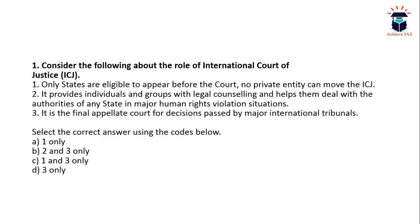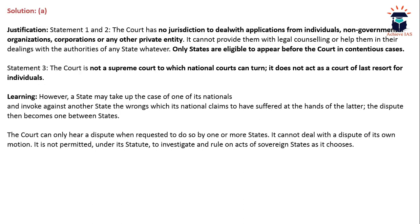First question: consider the following about the role of the International Court of Justice. First, only states are eligible to appear before the court — no private entity can move ICJ. Second, it provides individuals and groups with legal counseling and helps them deal with authorities of any state in major human rights violation situations. Third, it is the final appellate court for decisions passed by major international tribunals. Only one statement is correct — the first statement. So the answer is A, one only. The court has no jurisdiction to deal with applications from individuals, NGOs, corporations, or any other private entity.